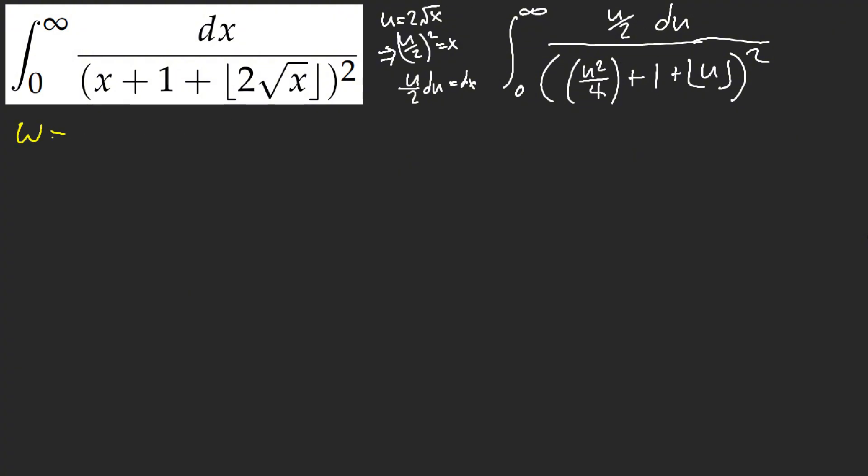Let's let w equal u squared over 4 plus 1. Can I do that? Oh no. Oh yes I can, technically. Because watch. I think you can get rid of this by doing this.